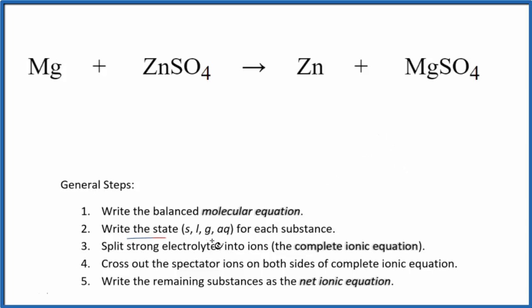Then we need to write the state for each substance. Magnesium, that's by itself, it's a metal, so it's going to be a solid.